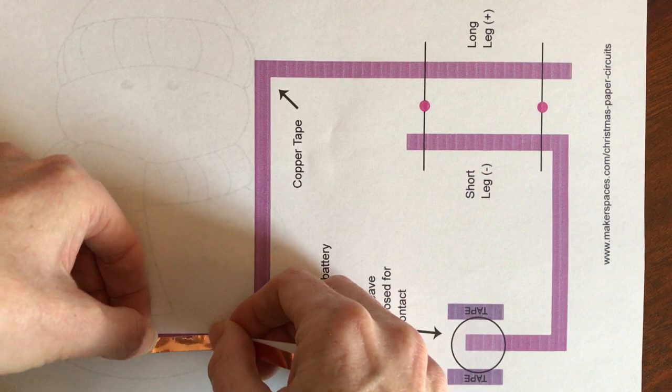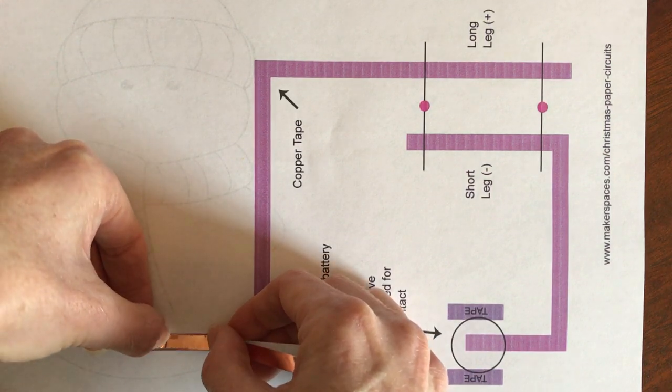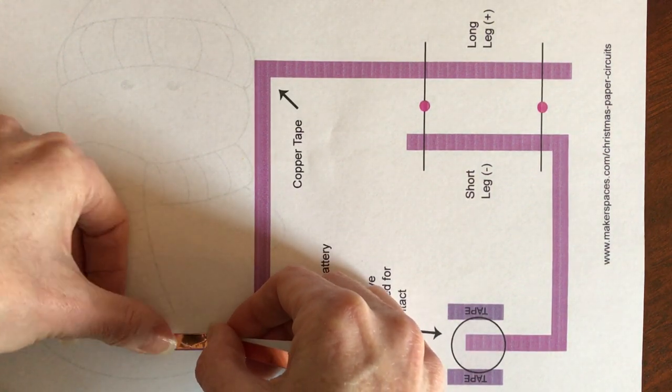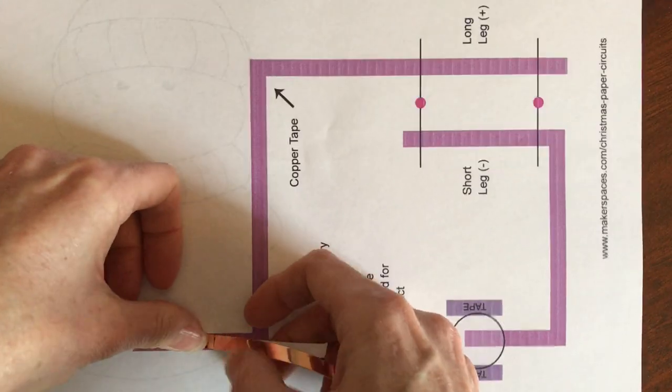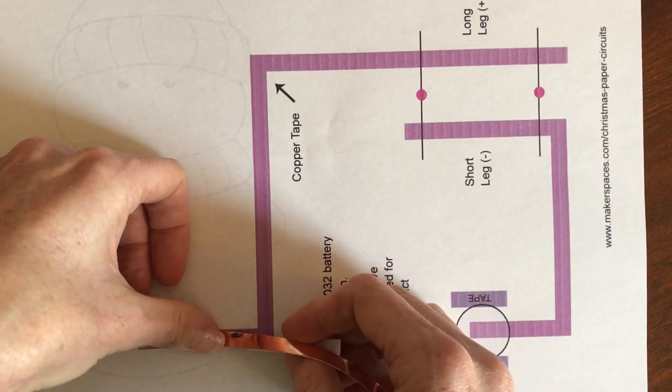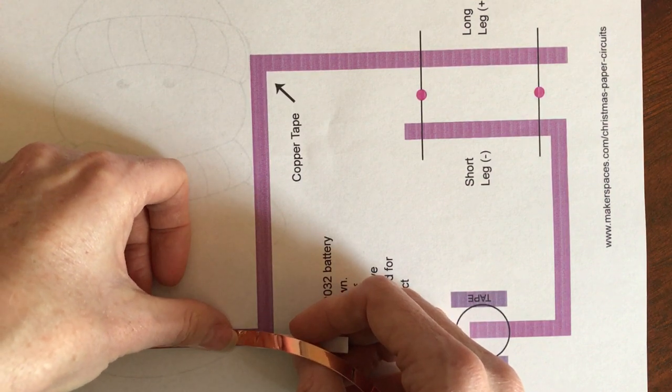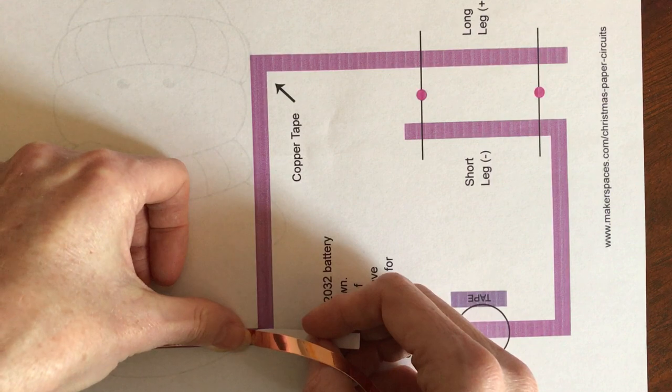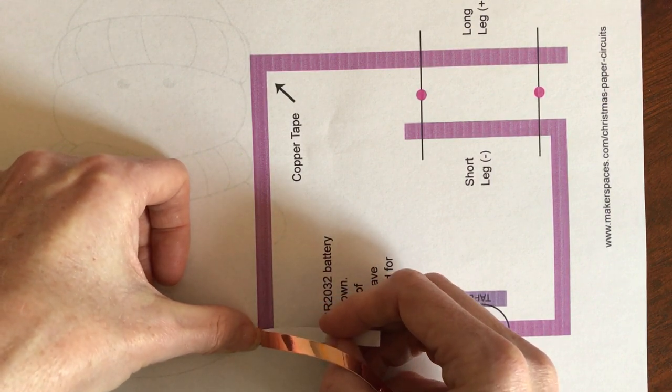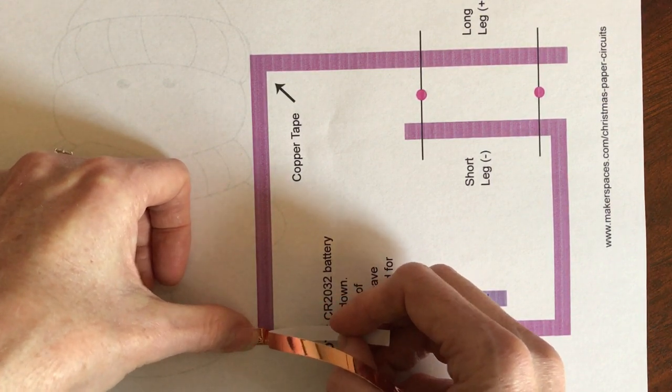And now very carefully, I'm going to lay this copper tape down on the path. Try to go right to the end there. I'm going to stick it down really nice and tight. And then I'm going to just pull back a little at a time while I'm sticking. So press down, pull back, press down, pull back.